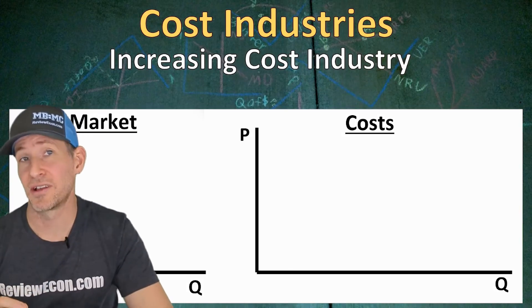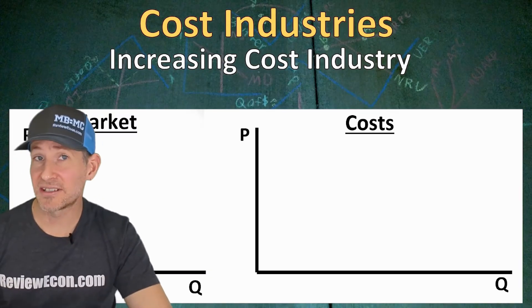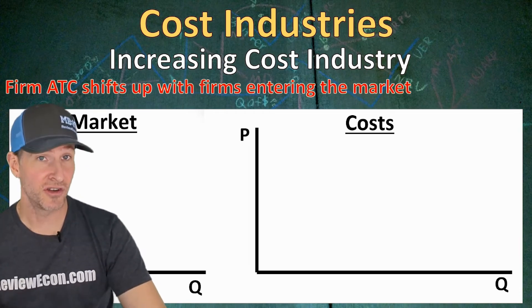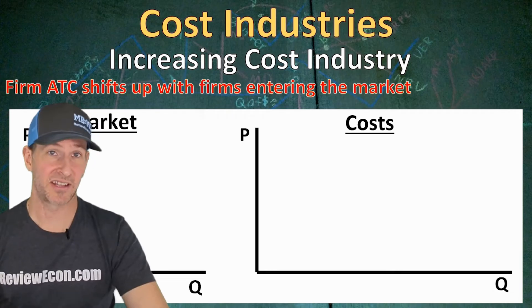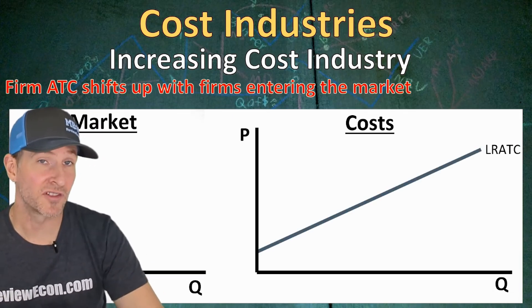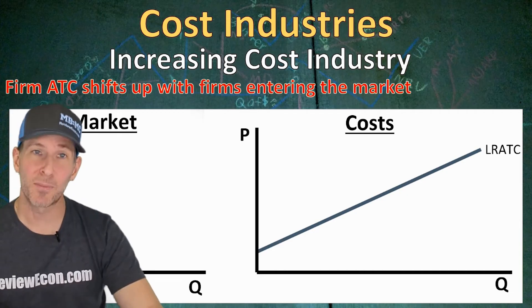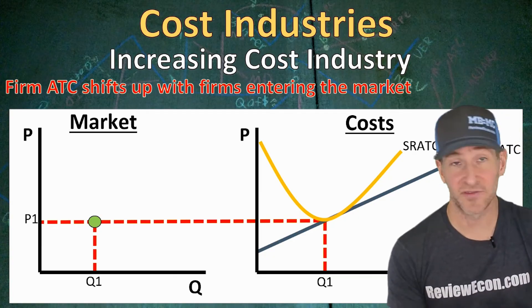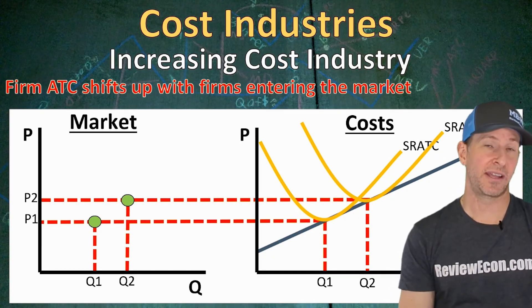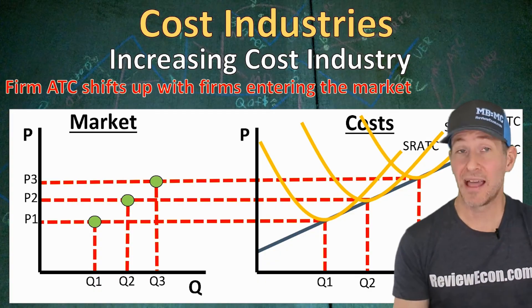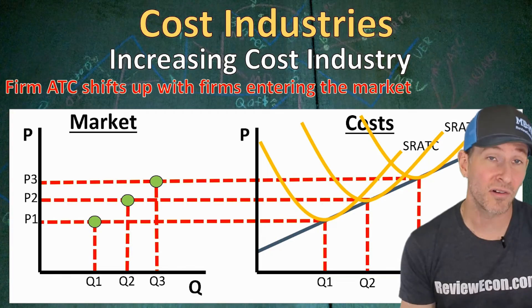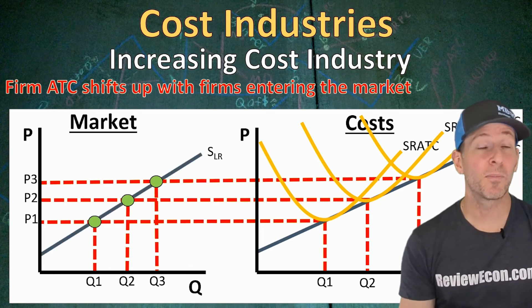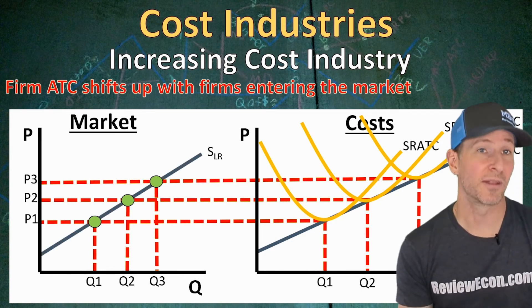There aren't a lot of exam questions about the next two industries, but you should be aware of them. With an increasing cost industry, the average total cost curve for each individual firm will shift up as new firms enter the market, or down as firms exit the market. The reason for this is because the long-run average total cost curve for the entire industry is upward sloping. At one level of capacity for the market, we're going to have a low average cost for each firm, but as firms enter the market the average costs are going to rise. That means the long-run prices in the market are also going to rise to the new higher minimum of the average total cost curve, giving us an upward-sloping long-run supply curve within the market.